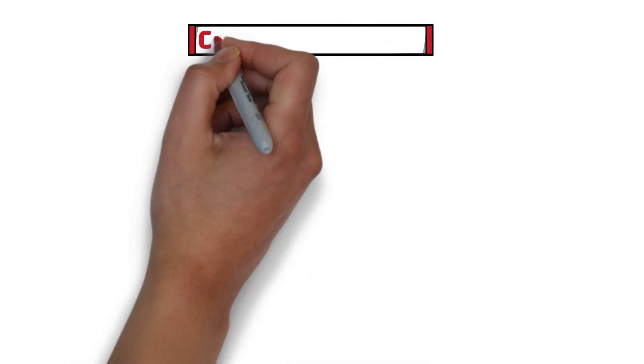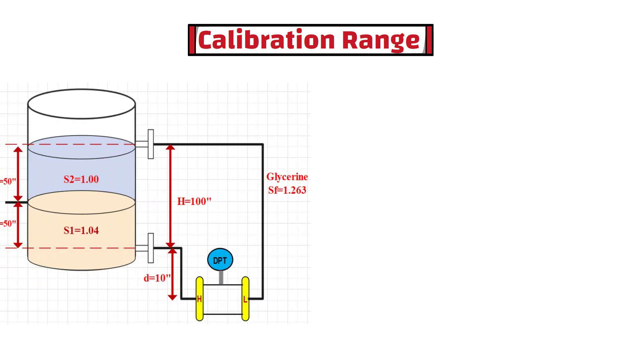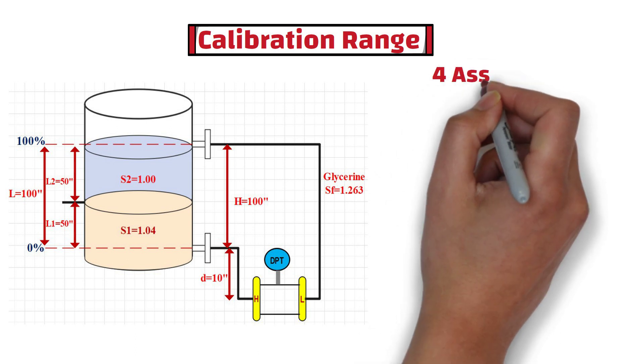First of all, I am going to calculate the calibration range for this DP transmitter. To determine the calibration range for this transmitter, I will make four assumptions.